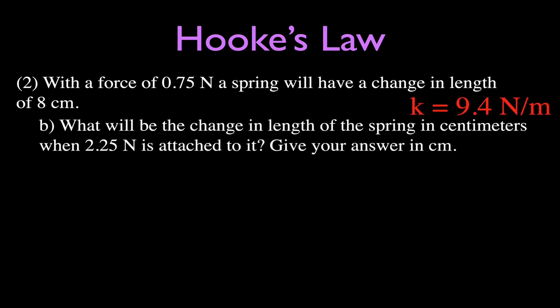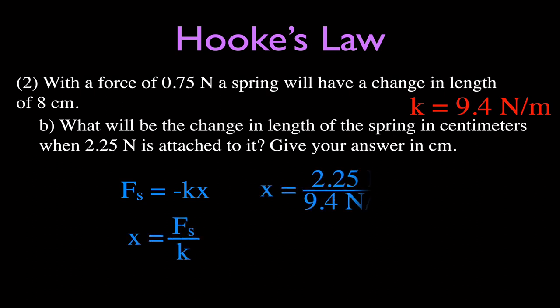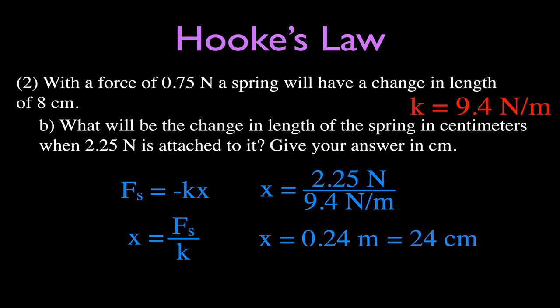For part B, using the same spring with k = 9.4 N/m, what would be the change in length when 2.25 newtons is applied? Solving for x: force divided by k gives 2.25 divided by 9.4. Since 2.25 is roughly a quarter of 9.4, the change in length should be close to a quarter of a meter — and indeed we get 0.24 meters, or 24 centimeters. Force and change in length are directly proportional.